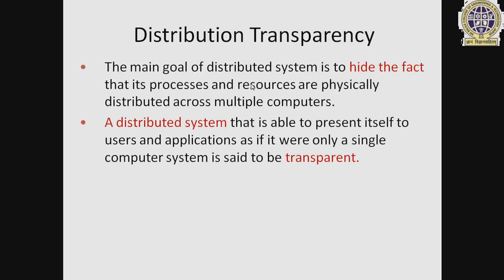The main goal of a distributed system is to hide the fact that its processes and resources are physically distributed across multiple computers. A distributed system that presents itself to users and applications as if it were only a single computer system is said to be transparent.